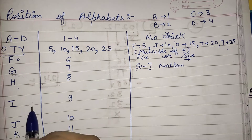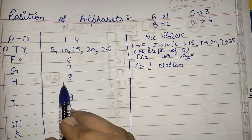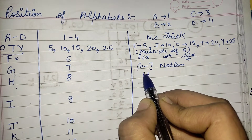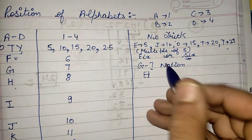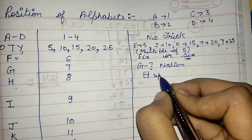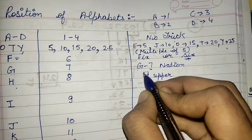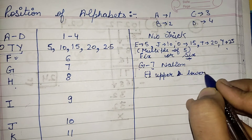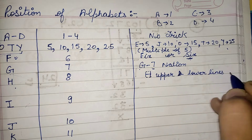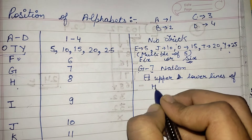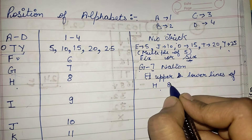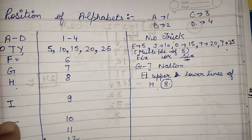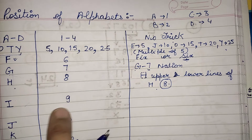Next is H. H is present at the eighth position. If I write down H and join the upper and lower lines of the number eight, I get the number 8 in mathematics. So join the upper and lower lines of H and you get the number eight — that means H is present at the eighth position.